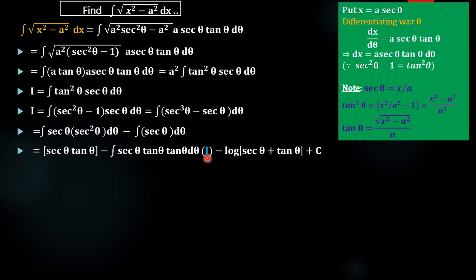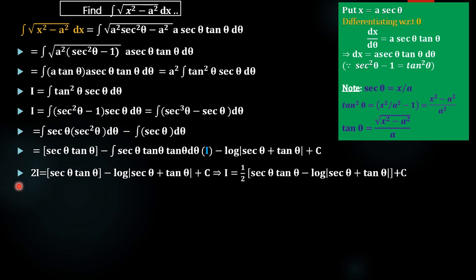Taking the I term to the left-hand side, we get I + I = 2I. Therefore, 2I = sec θ·tan θ - log|sec θ + tan θ| + c. Dividing both sides by 2, we get I = (1/2)[sec θ·tan θ - log|sec θ + tan θ|] + c. This is the value of the integral ∫tan²θ·sec θ dθ.